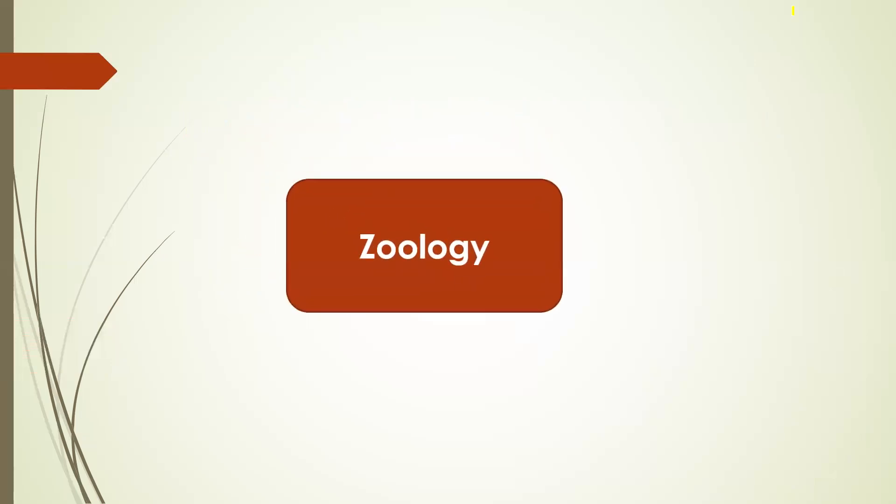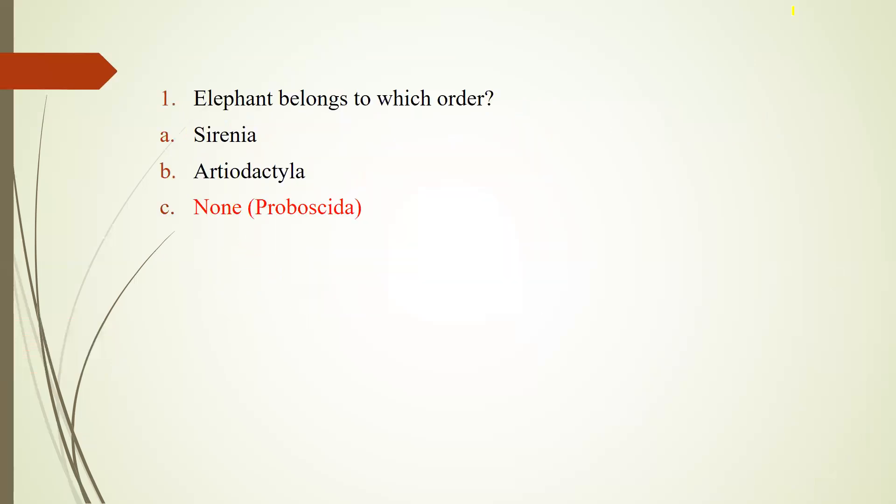Now let's discuss the Zoology portion. The first question is: Elephant belongs to which order? Elephants belong to the order Proboscidea. Here you have three options: Sirenia, Artiodactyla, and none of these. Our paper had none of these options suitable. Here I have corrected it - Proboscidea, which is the correct option.